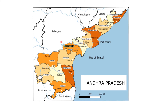The districts which shared a border with Telangana are Kurnool, Prakasham, Guntur, Krishna, West Godavari, and East Godavari. Three districts shared a border with Karnataka: Kurnool, Anantapur, and Chittoor. Two districts shared a border with Tamil Nadu: Chittoor and Nellore.